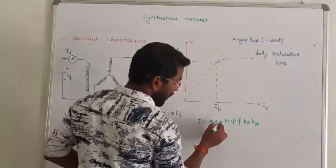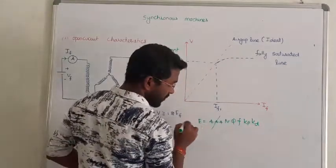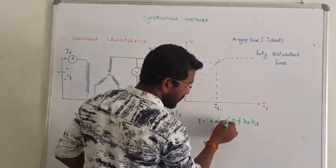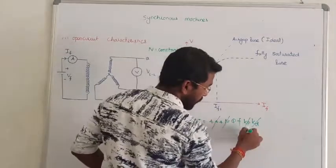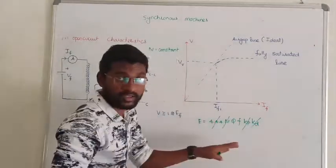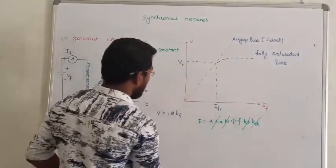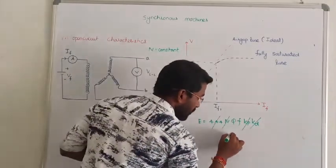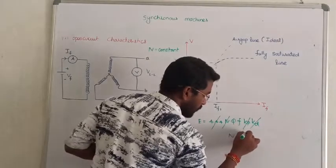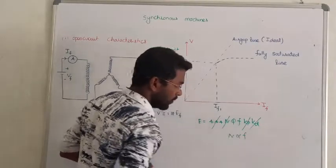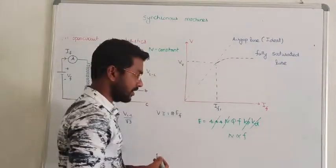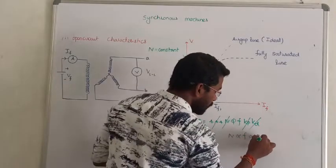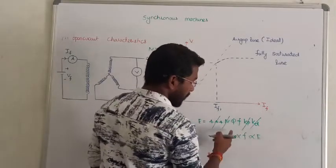If we are going to maintain speed as constant, then the number of turns, distribution factor, and pitch factor are all constant. Speed being constant directly affects frequency — speed and frequency are directly proportional. And frequency is directly proportional to induced EMF.